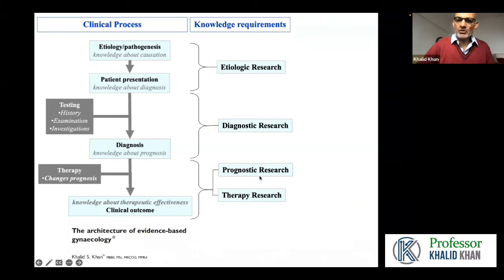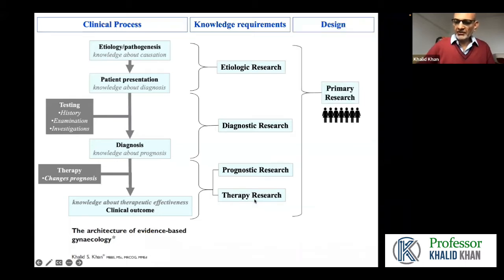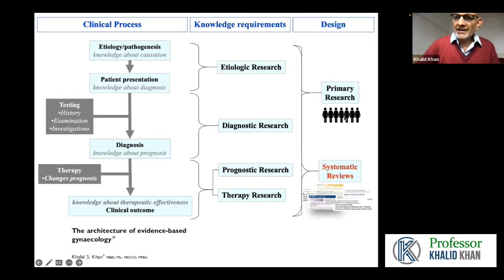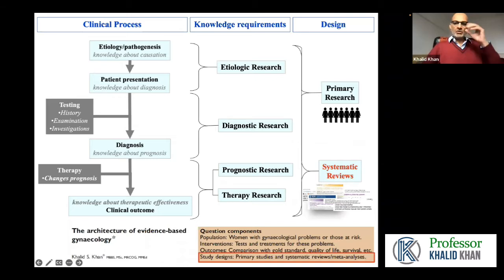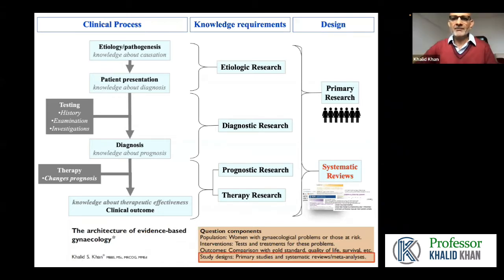For each one of these research types, we can do the research directly with patients, or we can take data from published studies and put them together in a systematic review and conduct a meta-analysis. I hope here you can see how research and various types of research can be put together in studies from which data can be extracted and a systematic review or meta-analysis conducted.